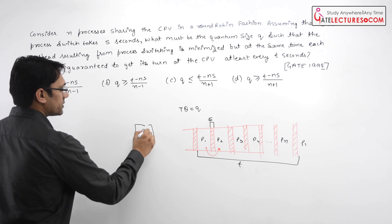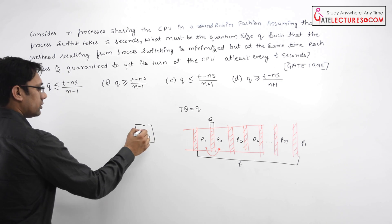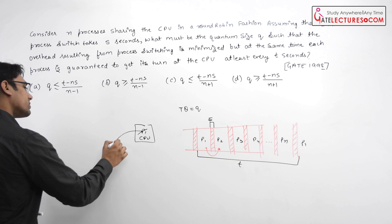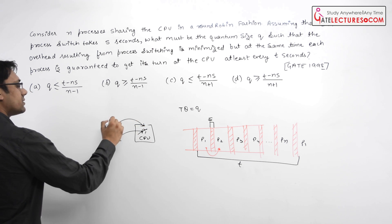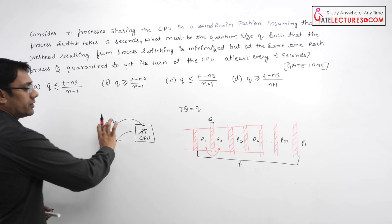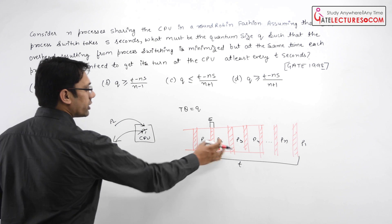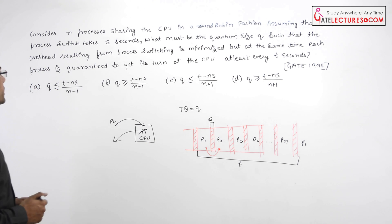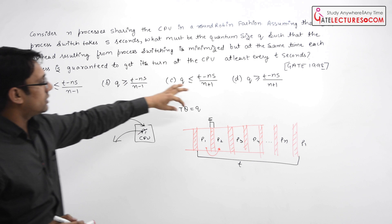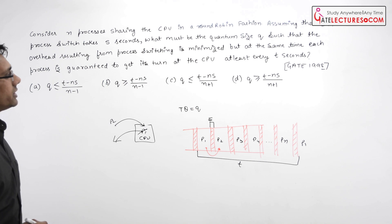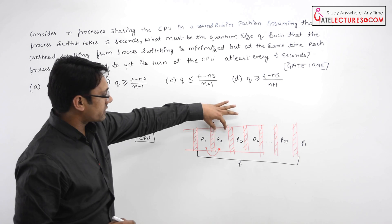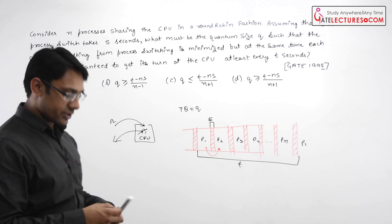If a process is in the CPU, then to bring this process out and bring the other process inside, the total time taken for this switch is called the context switching time. Here the context switching time is S seconds. Then what must be the quantum size Q? They are asking this quantum size Q.